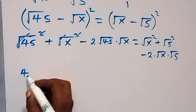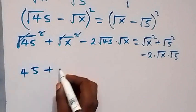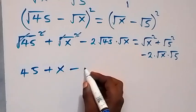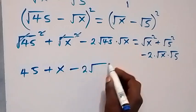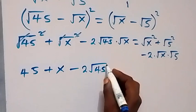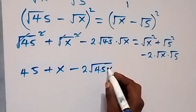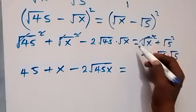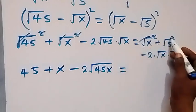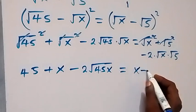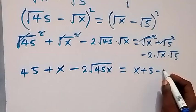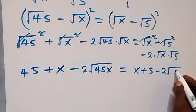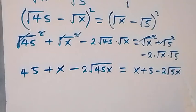Squaring cancels the square roots, so we get 45 plus x minus 2 root 45x on the left, and x plus 5 minus 2 root 5x on the right.